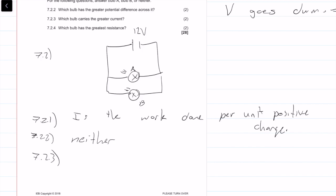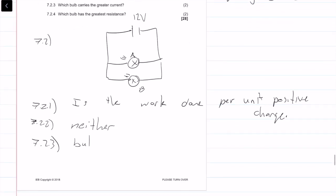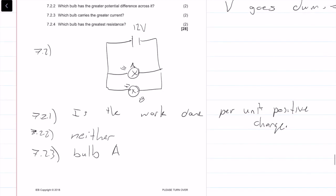7.2 point 3: which bulb carries the greater current? I already established that bulb A glows more brightly, so therefore, bulb A will carry more current. We also know that V of A equals I of A times R of A, and V of B is equal to I of B times R of B. But we know that the voltage of A is equal to the voltage of B, so these two things are the same.